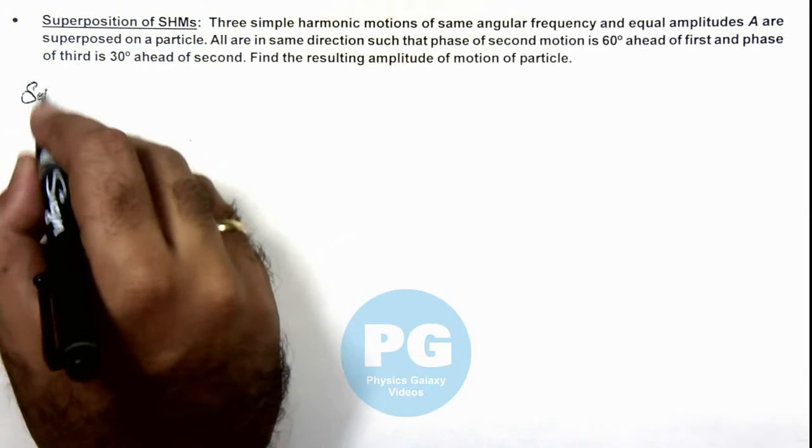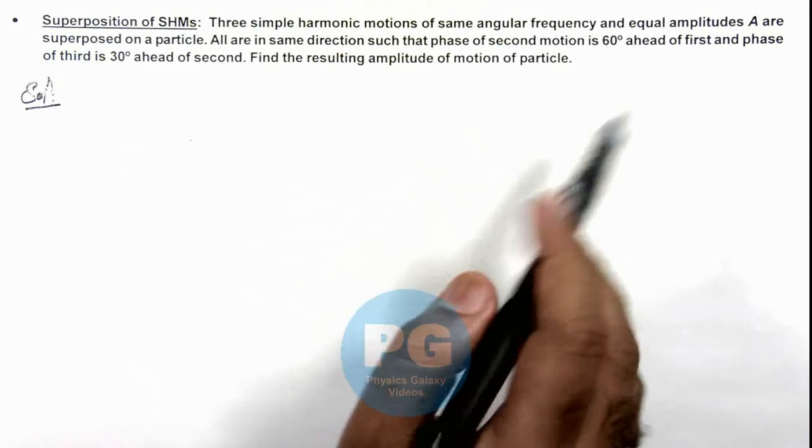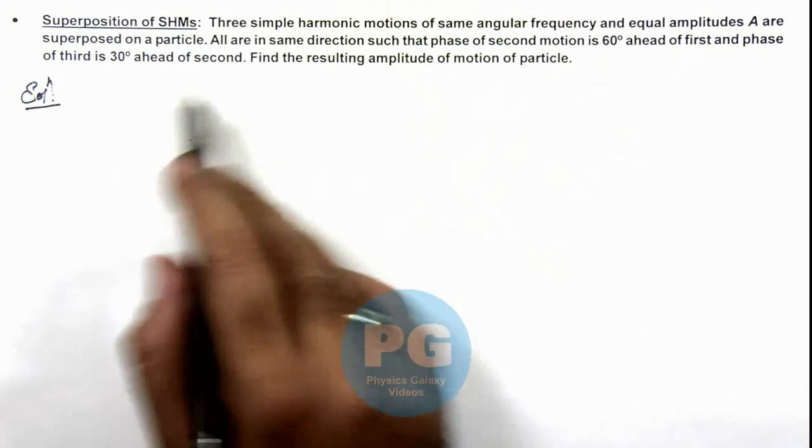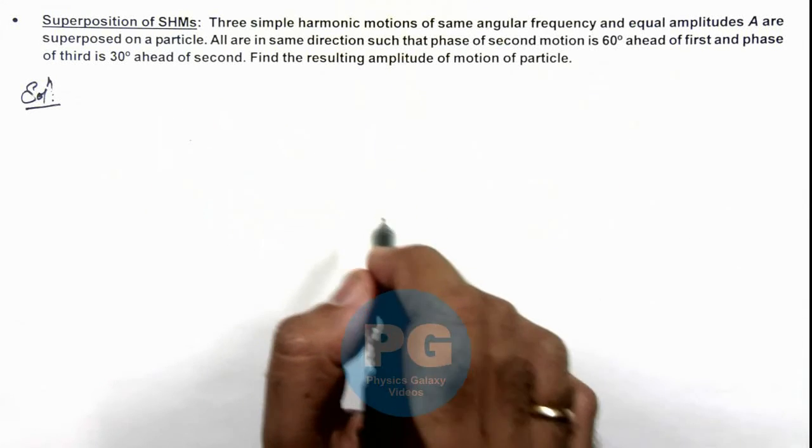Now in the solution here we can see, as they are of amplitude A, we can consider these amplitudes as vectors with their phase as angle between the vectors.